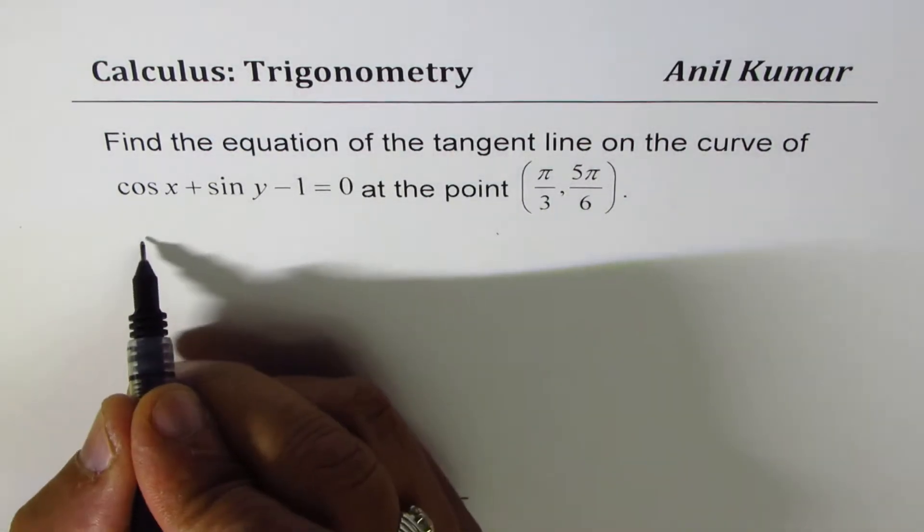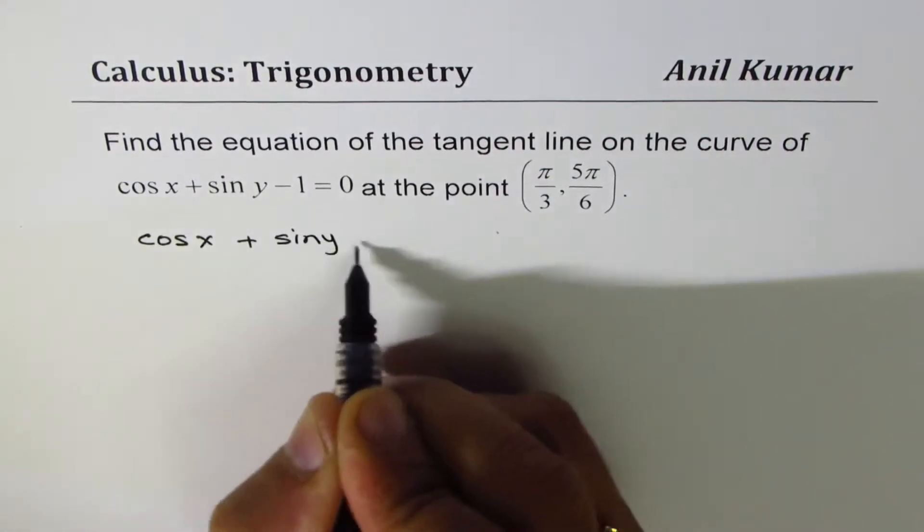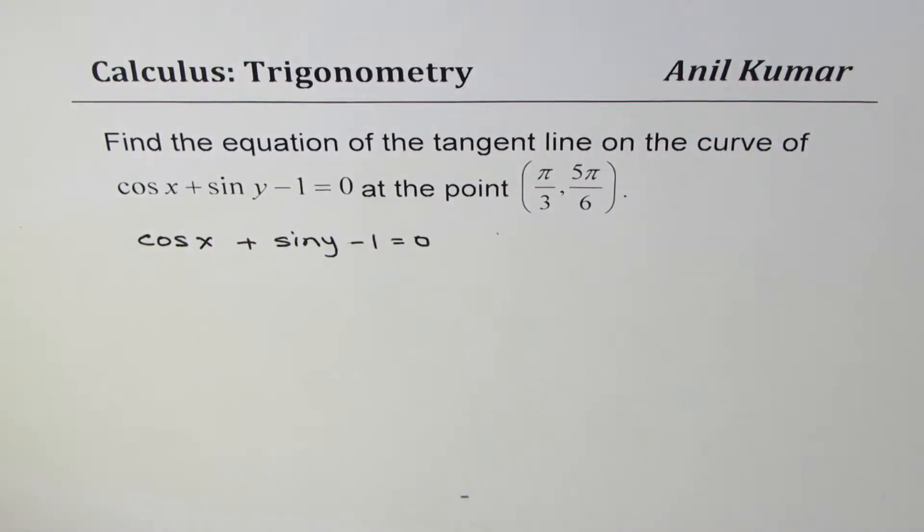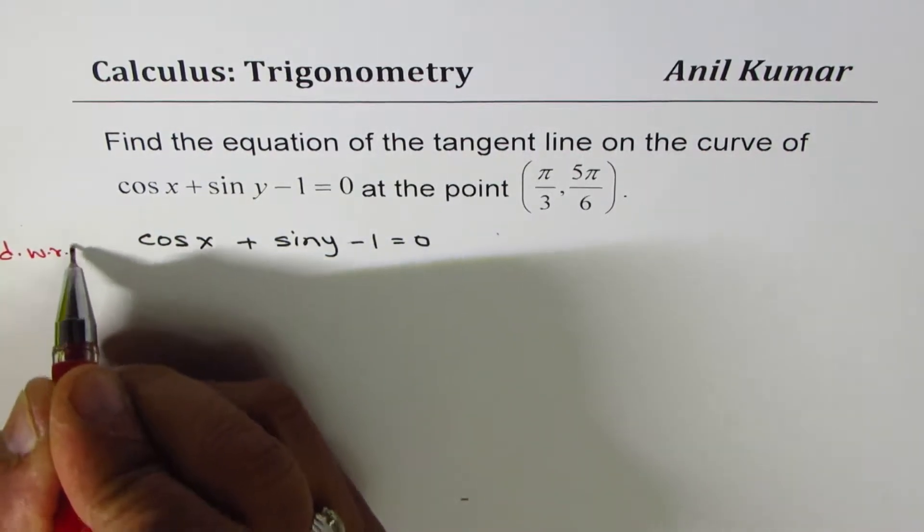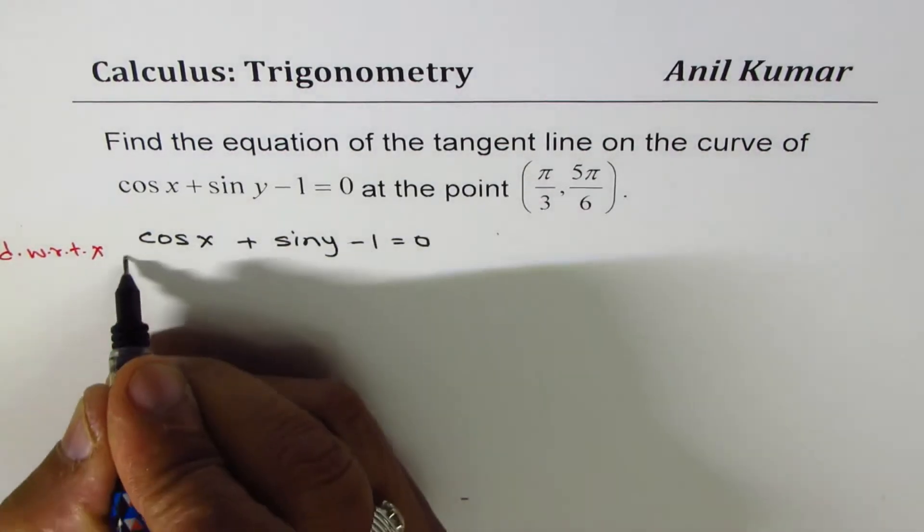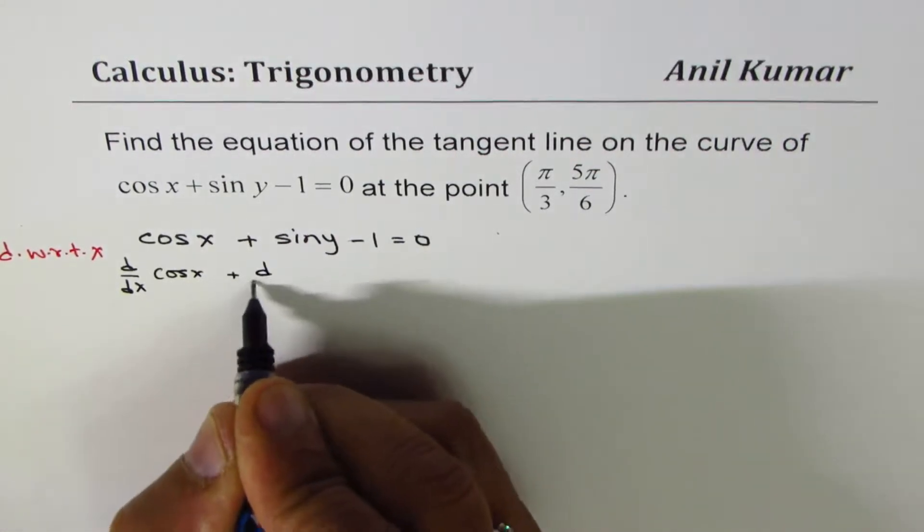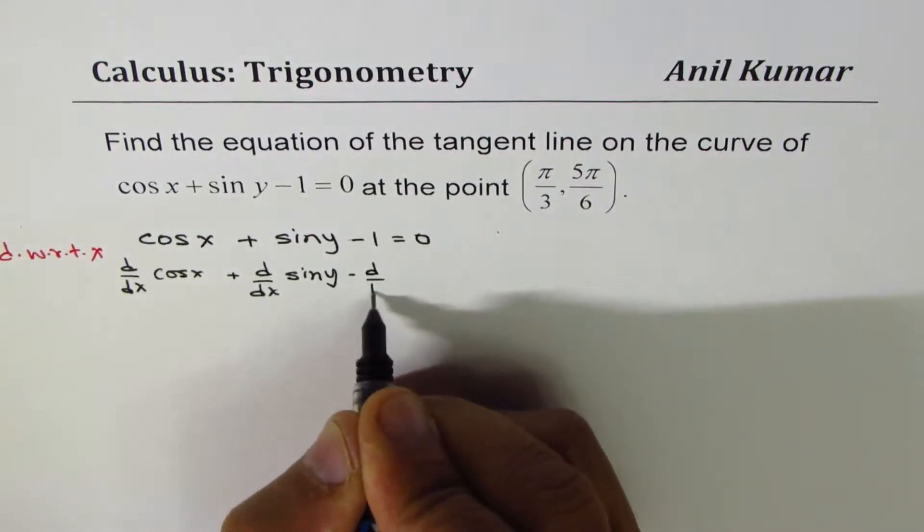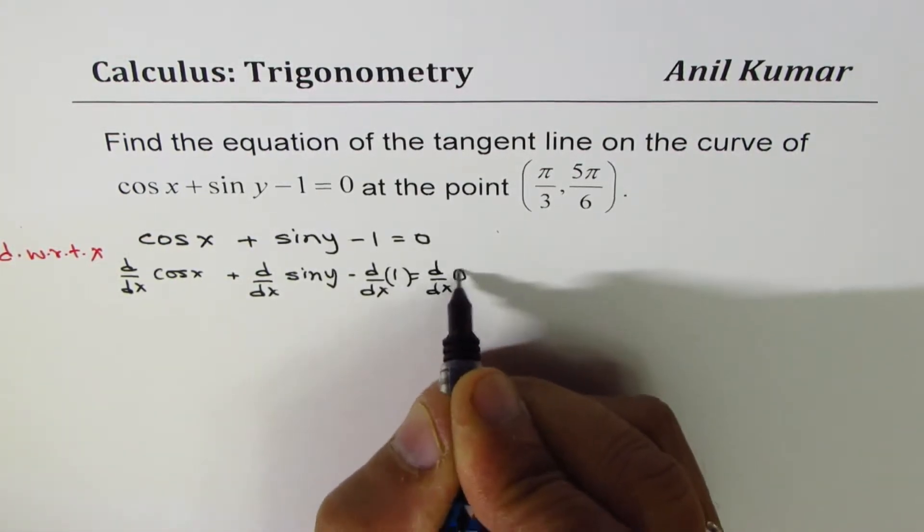Let's rewrite the equation: cos x + sin y - 1 = 0. Now, let me take the derivative of the function with respect to x. We'll differentiate with respect to x, that is to say: d/dx of cos x plus d/dx of sin y minus d/dx of 1 equals d/dx of 0.